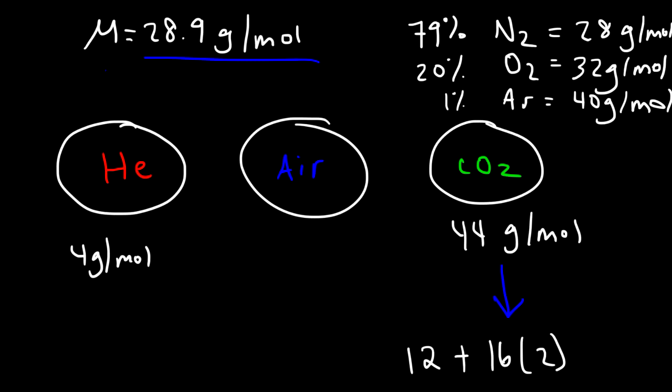If you fill a balloon with helium it's going to rise, because helium is lighter than air. Just as ice placed at the bottom of a container of water rises to the top, helium rises because it is less dense than air. Likewise, just as aluminum sinks in water because it's heavier, carbon dioxide is heavier than air and that's why it sinks.